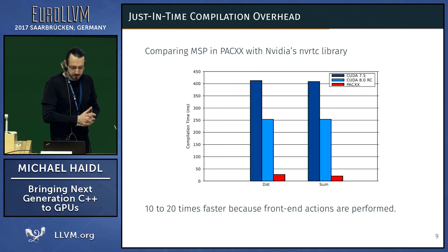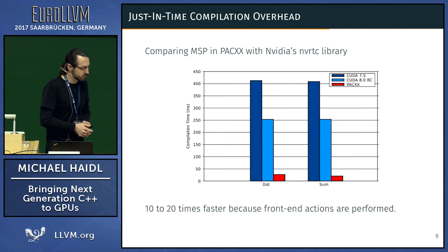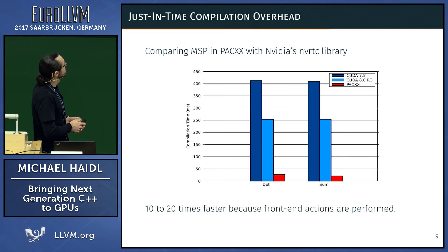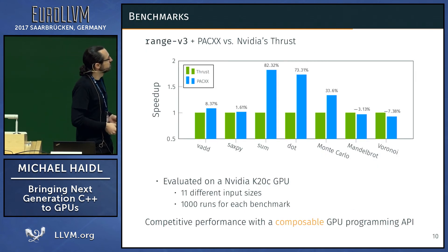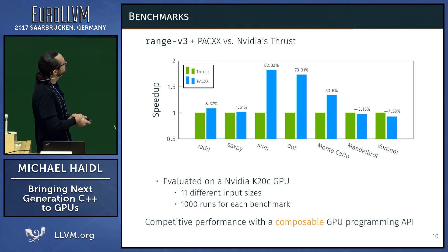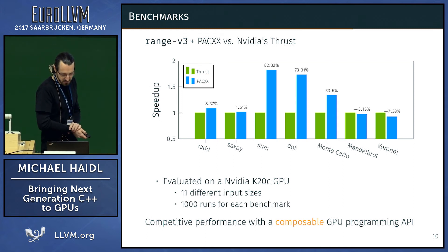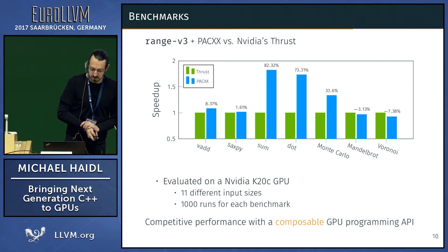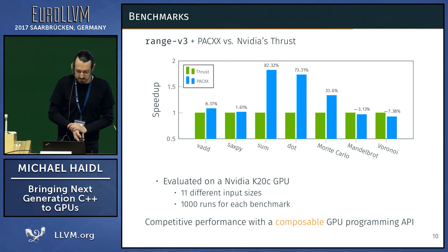For performance, we did some benchmarking and compared with examples from Thrust — doing Monte Carlo, Mandelbrot, and Voronoi computations, besides the smaller SAXPY, SUM, and DOT benchmarks. We see we can achieve competitive performance to Thrust, and with our multi-stage programming optimization we can even outperform them.